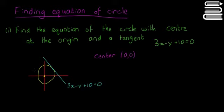For a circle with the center at the origin, the equation is going to be x squared plus y squared equals r squared. So basically, all we need to do is find r, this radius here. So how are we going to do that?